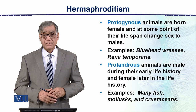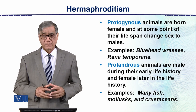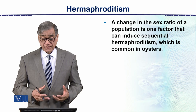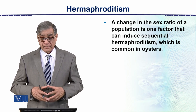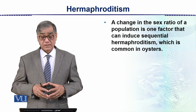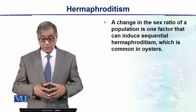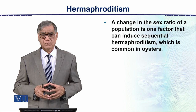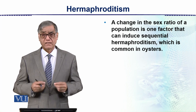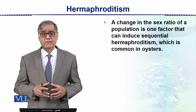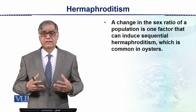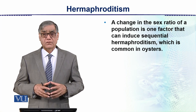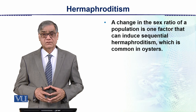A change in the sex of a population is one factor that can induce sequential hermaphroditism, which is common in oysters. In oysters — which are mollusks — this condition can also be introduced. Oysters are also used as food. So this covers hermaphroditism and its two types.